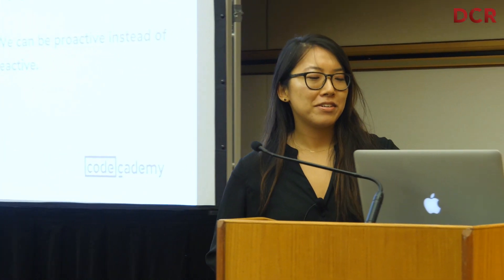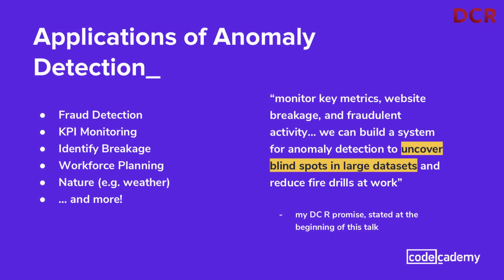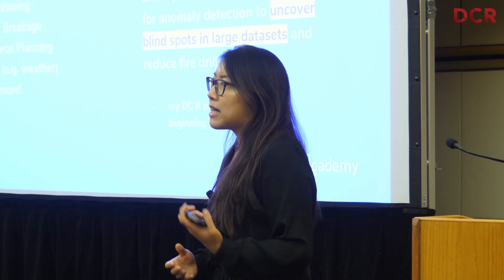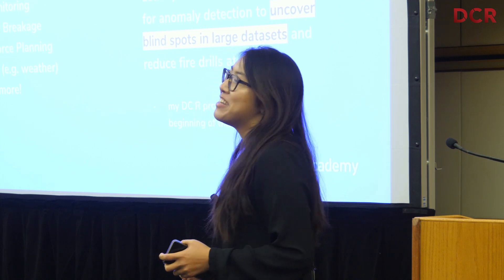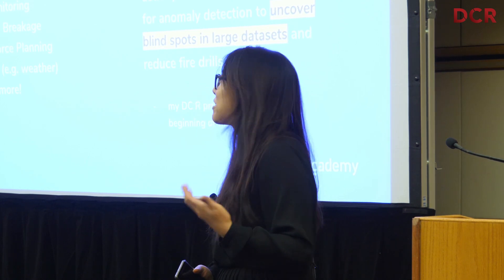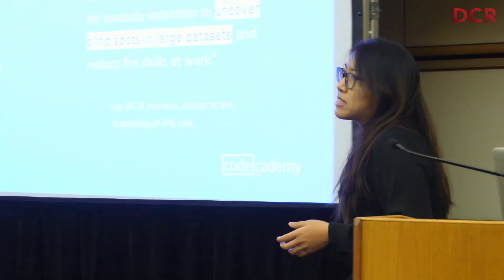Here are some applications of anomaly detection. If you remember my DCR promise — it's to help you uncover blind spots in large data sets. An example would be the chart I showed before: that was breakage at the last company I worked at. At an airline, flights had gone out empty because of human error, and we would have been able to get ahead of that with anomaly detection.